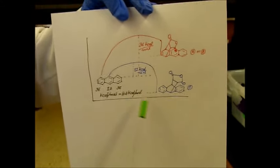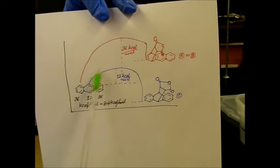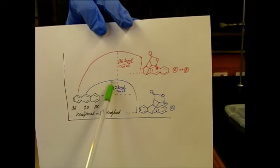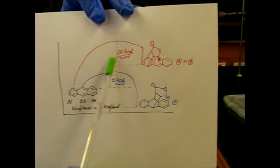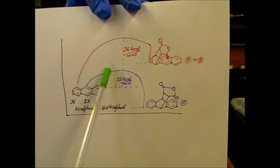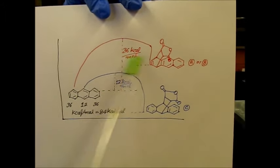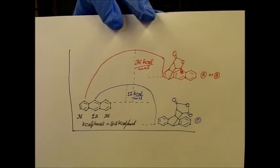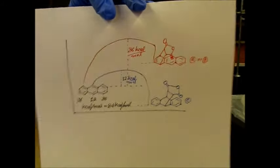In another way, you can also understand why this product is forming. Because this terminal ring product is required more kinetic energy or transition energy. Transition state is very high compared to the middle ring. This is the reason we get the major product as the middle ring one.